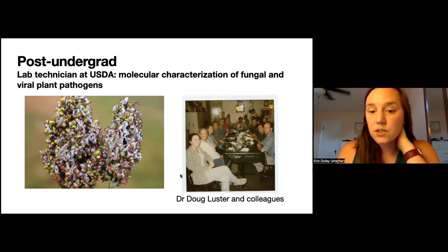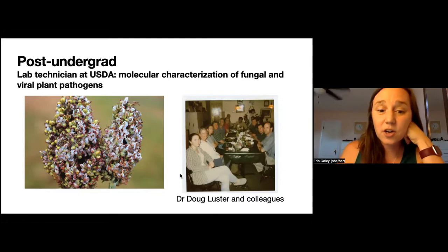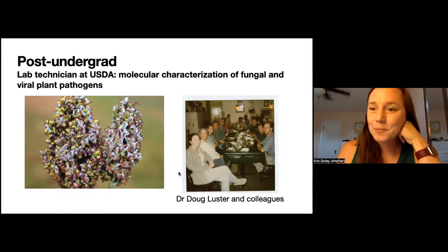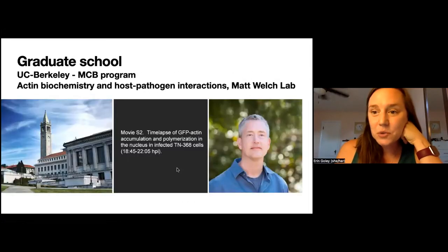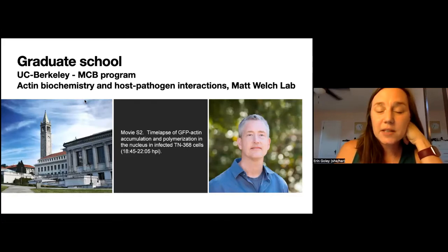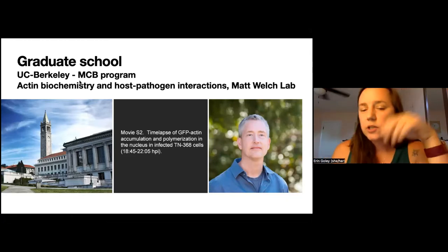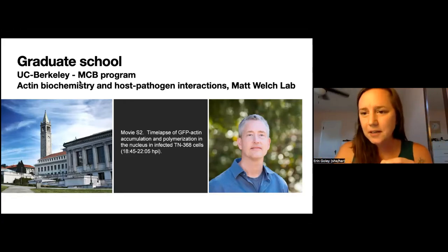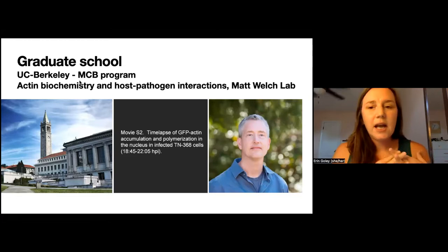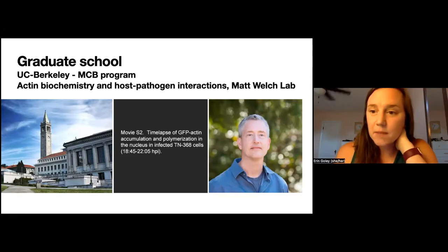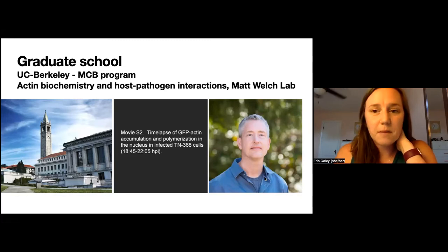So at the end of that experience, I decided to apply to graduate school. I actually thought what I would do was end up teaching at a small college like the one I had gone to, probably because I was naive and hadn't experienced much else. But I did apply and ended up going to UC Berkeley, looking for programs with strengths in microbiology and molecular biology. I ended up in the MCB — molecular and cell biology — program at Berkeley. All of the labs I rotated in were studying microbiology, bacteriology or virology, and they all looked at how pathogens interact with the actin cytoskeleton. I ended up joining the lab of Matt Welch, who has been a tremendous mentor to me throughout my career.